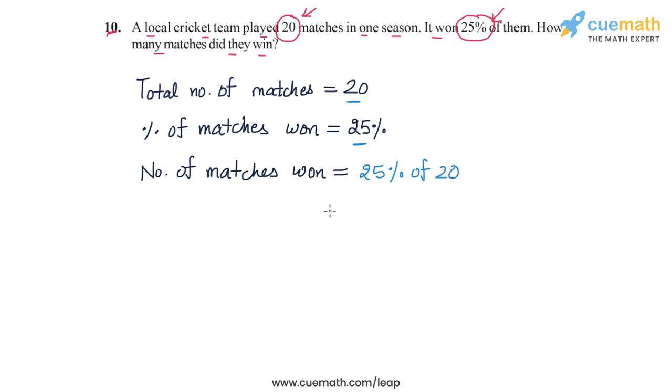This will be 25 by 100 into 20. Now 100 by 25 is 4, and 20 by 4 is 5.